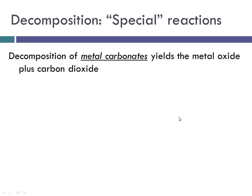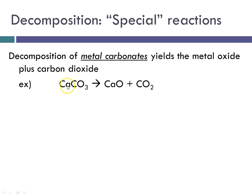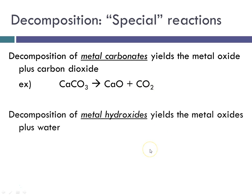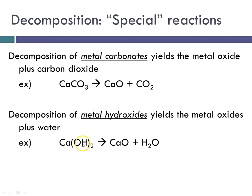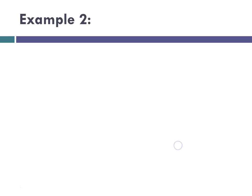Now for some special reactions. Decomposition of metal carbonates will yield the metal oxide plus carbon dioxide. Example: calcium carbonate gives calcium oxide and CO2. The decomposition of metal hydroxides will yield metal oxides plus water. Example: calcium hydroxide yields calcium oxide and water. Those of you who watched the synthesis tutorial will recognize these as the reversal of some of our special synthesis reactions.